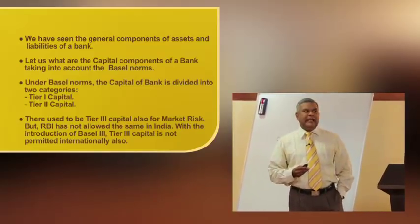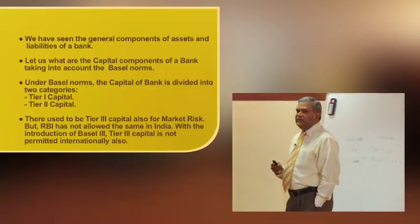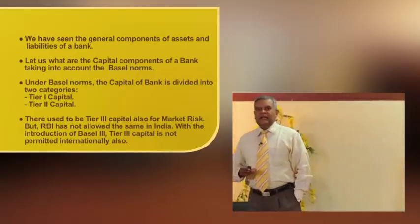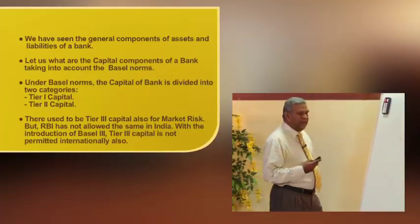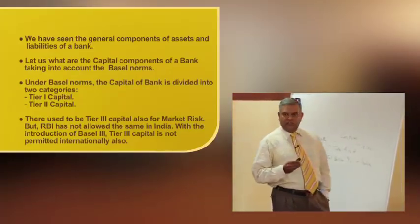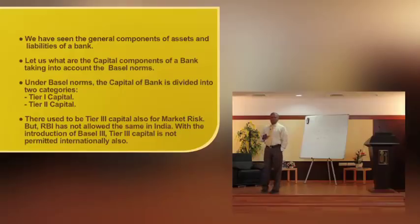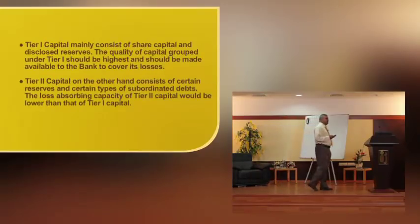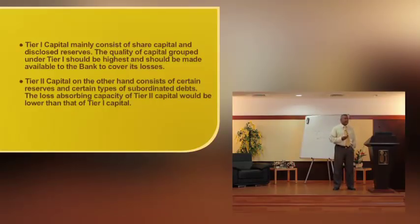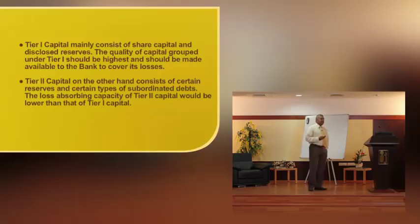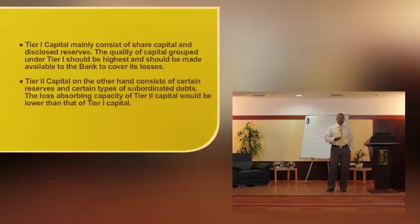What remains is Tier-1 capital and Tier-2 capital. Tier-1 is good quality capital, called core capital. Tier-2 is also a good capital — it resembles capital but is quasi-capital. Tier-1 capital mainly consists of share capital and disclosed reserves. The quality of capital grouped under Tier-1 should be highest and should be made available to the banks to cover losses. Tier-2 capital, on the other hand, consists of certain reserves and certain types of subordinated debts. The loss-absorbing capacity of Tier-2 capital is lesser than Tier-1 capital.